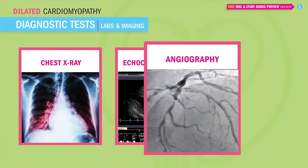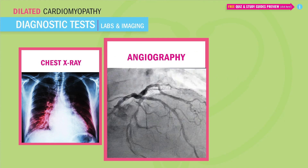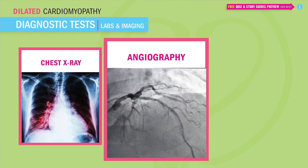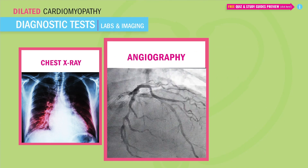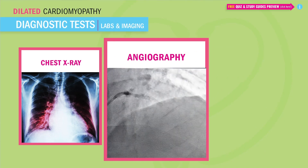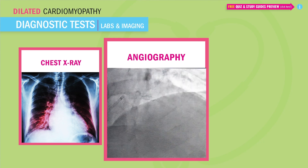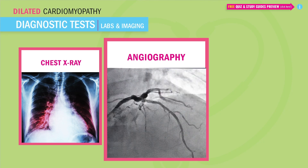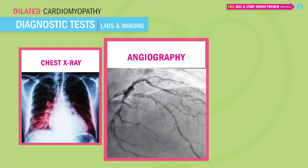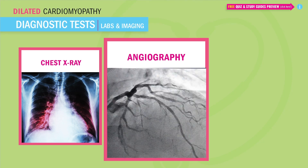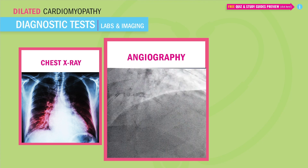An angiography is used to rule out ischemic heart disease. Dye is injected into the veins, acting like a highlighter to better visualize any blockages of the arteries or poorly oxygenated areas.